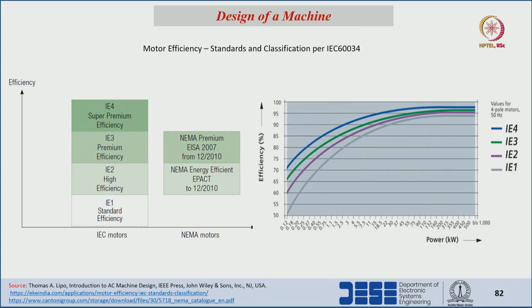After calculating all losses we find the efficiency, which must fall within the standards and classifications per IEC 60034: IE4, IE3, IE2, or IE1. These efficiency standards have been discussed already, along with the corresponding NEMA standards.